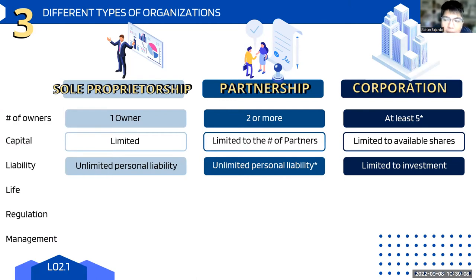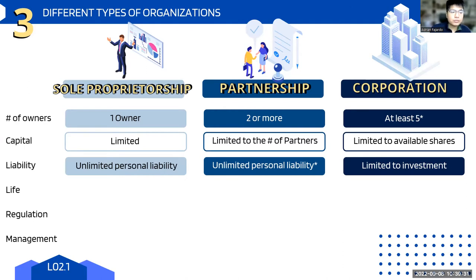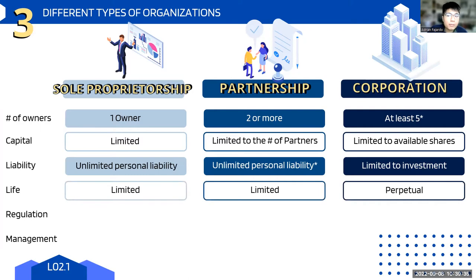For corporations, liability is limited to your investment. Even if you're part of a corporation and the claim is 10 million, if you only invested 20,000, only 20,000 can be taken — they cannot go after your personal savings. For the life of the organization: sole prop and partnership have very limited life because of the personal aspect — if the sole proprietor or partner dies, the organization dissolves. Unlike a corporation, whose ownership is in shares that can be transferred or inherited, so a corporation can continue indefinitely.